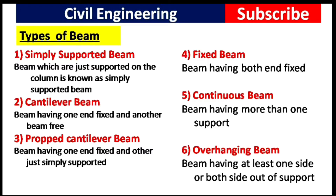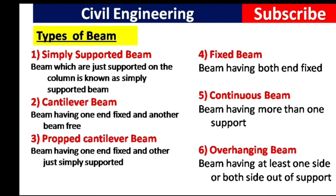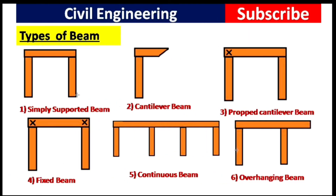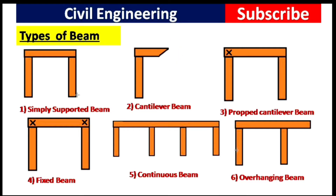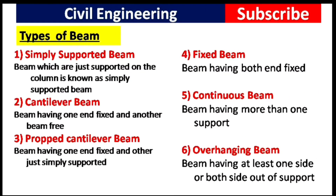The next beam is the cantilever beam. A cantilever beam is a beam having one end fixed and the other end free. As you can see in this picture, this beam has one end fixed and the other end free, and this is known as a cantilever beam.